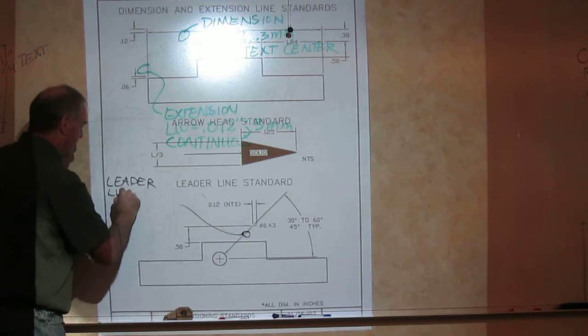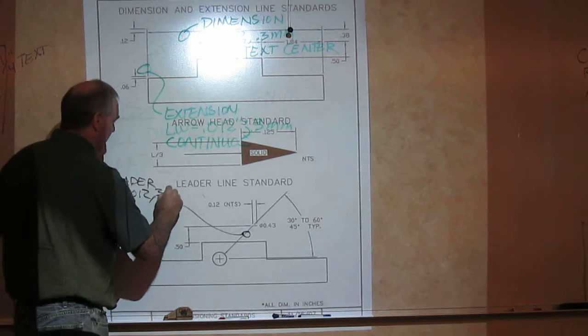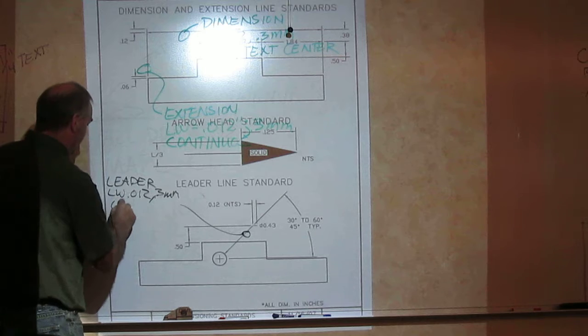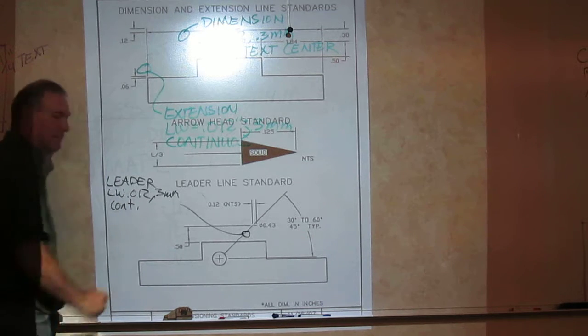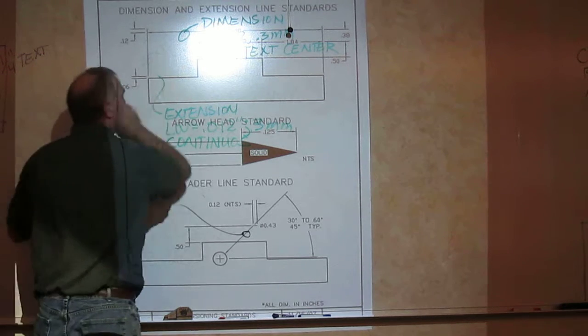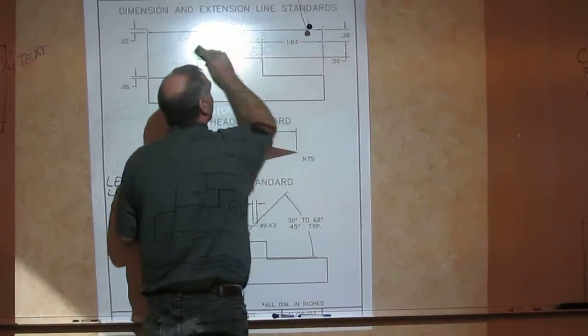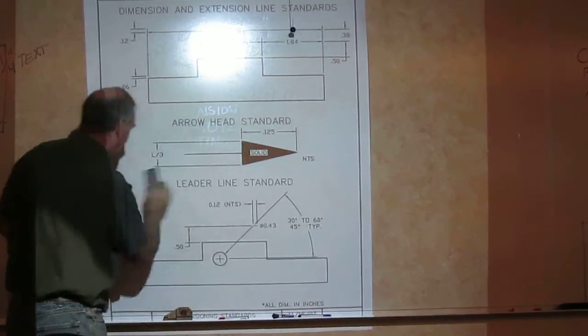And it has the exact same standards as the two above. So again, my line weight is equal to .012 or .3 millimeter as continuous line. All of these will go on the dimension layer when we go to the computer. Which drafting 135, our next course, will be all computer.